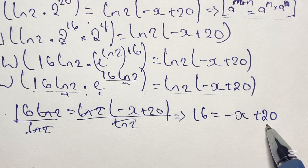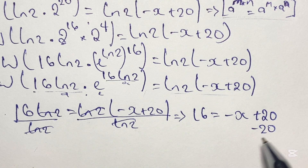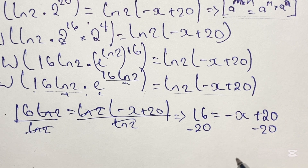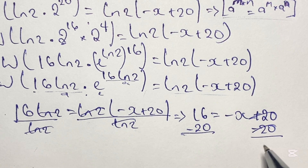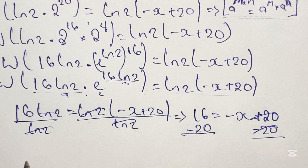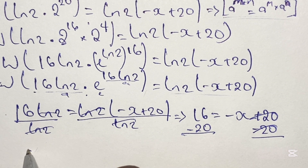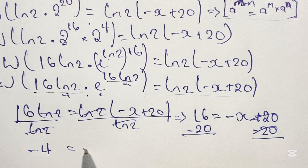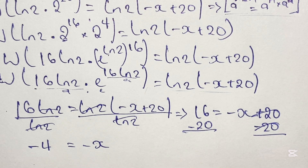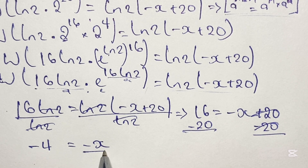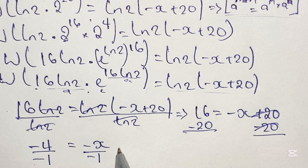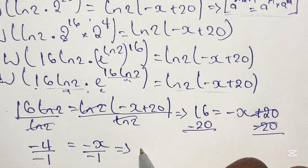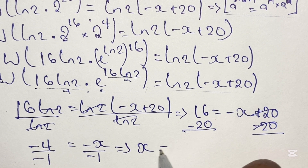From here we subtract 20 from both sides of this equation. So 16 minus 20 gives us negative 4, and this is equal to negative x. Then we divide both sides of this equation by negative 1, and therefore x is equal to 4.